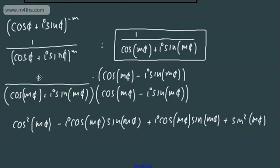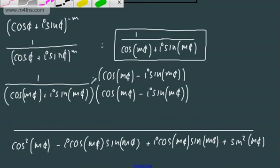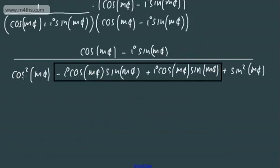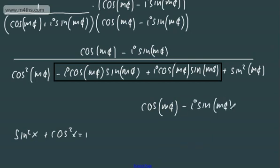On the numerator we have cos(mθ) minus i sin(mθ). On the bottom, the middle terms cancel — that's the difference of squares — leaving cos²(mθ) + sin²(mθ). We know that sin²x + cos²x = 1 for any value, so the denominator equals 1. We end up with cos(mθ) minus i sin(mθ) all over 1.